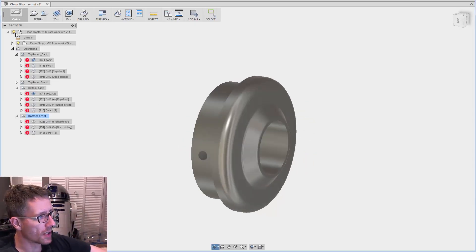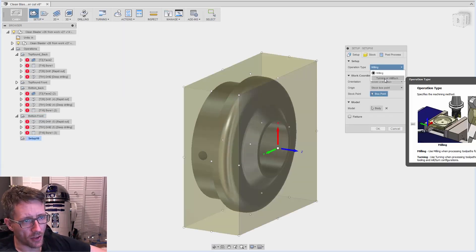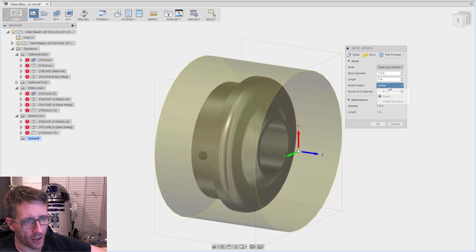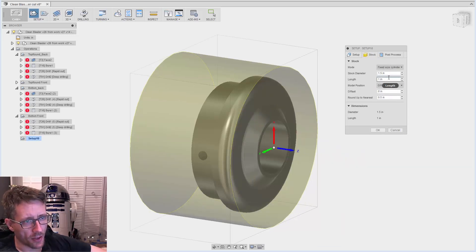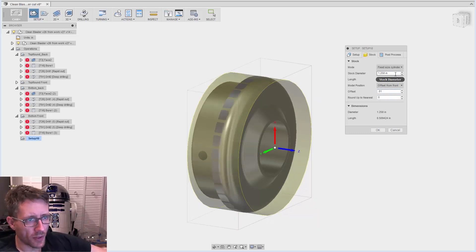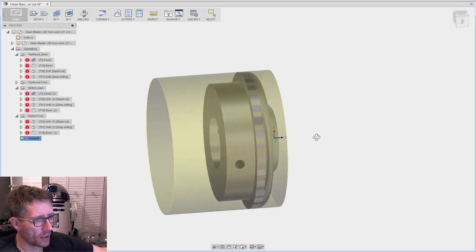Let's use Fusion to set up the CAM for this barrel tip. New setup - we're going to switch it from milling to turning or mill turn. For the stock, we're going to offset from the front, 0.01 for the offset, and make it 1.26 inches in diameter, say an inch long. Looks pretty good.